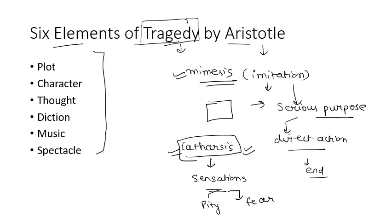Now, when we talk about the six elements of tragedy, these are: plot, character, thought, diction, music, and spectacle.